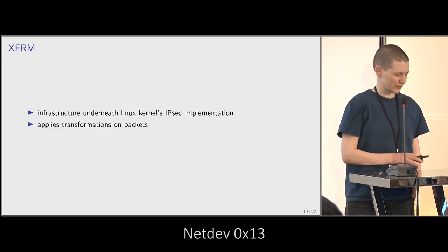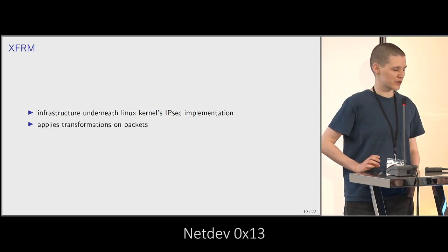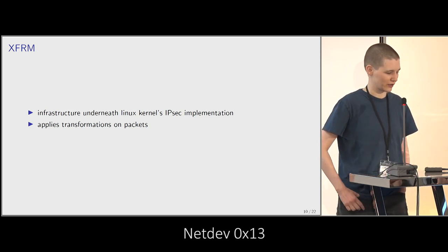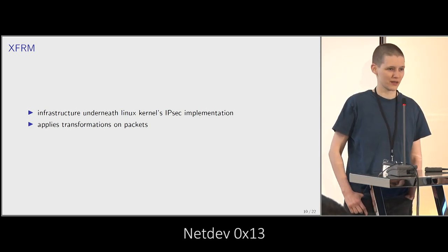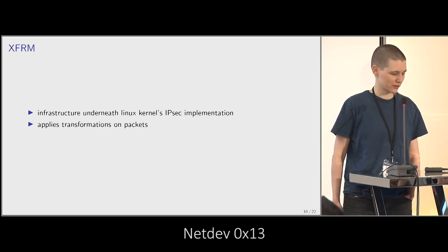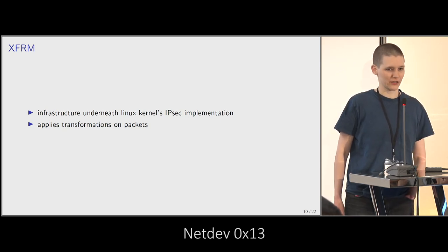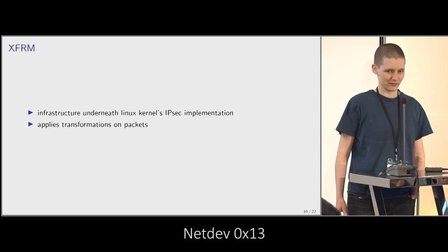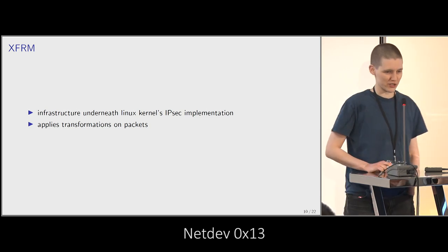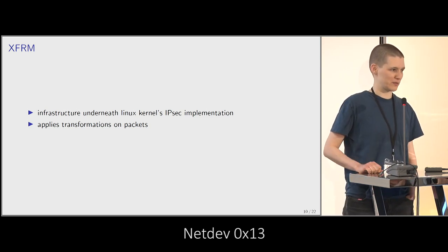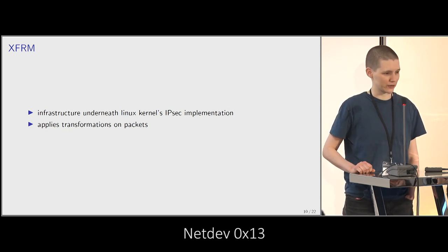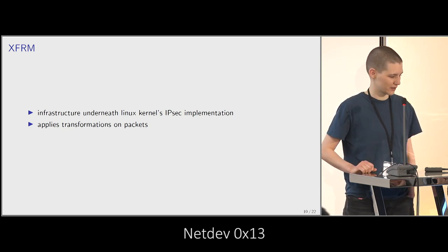In the Linux kernel we have XFRM, which is the infrastructure underneath the kernel's IPsec implementation. It takes packets and can apply all kinds of transformations. In the case of ESP, it adds the ESP header and encrypts the packets.